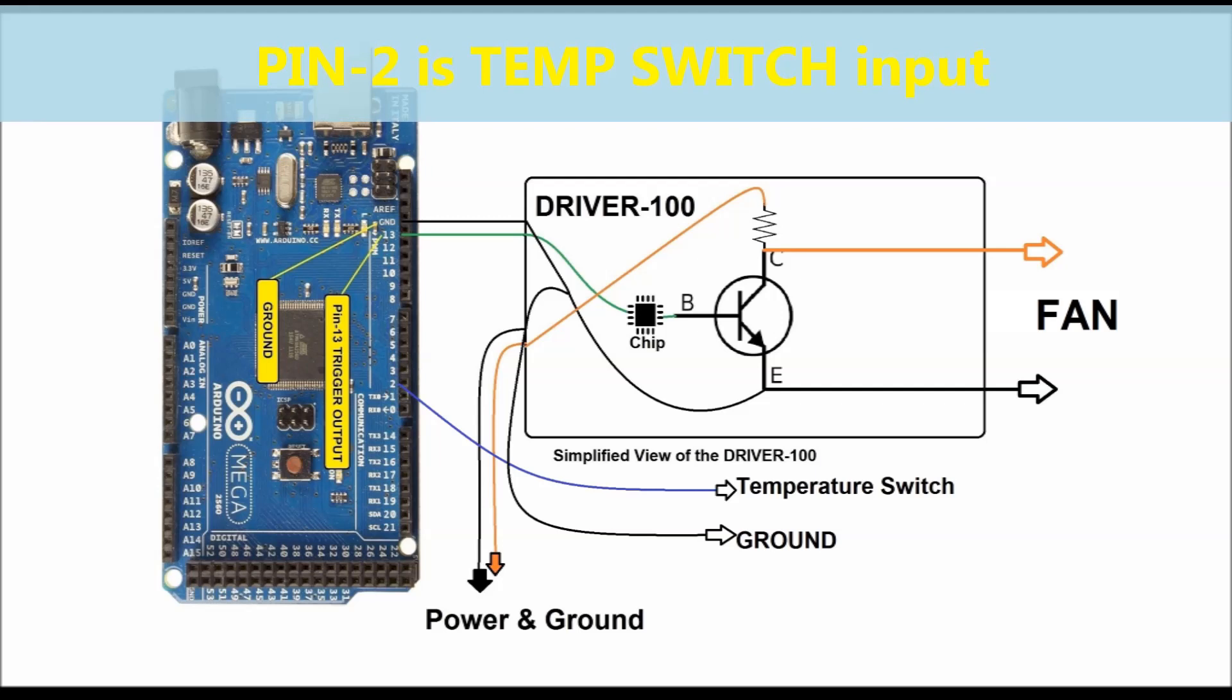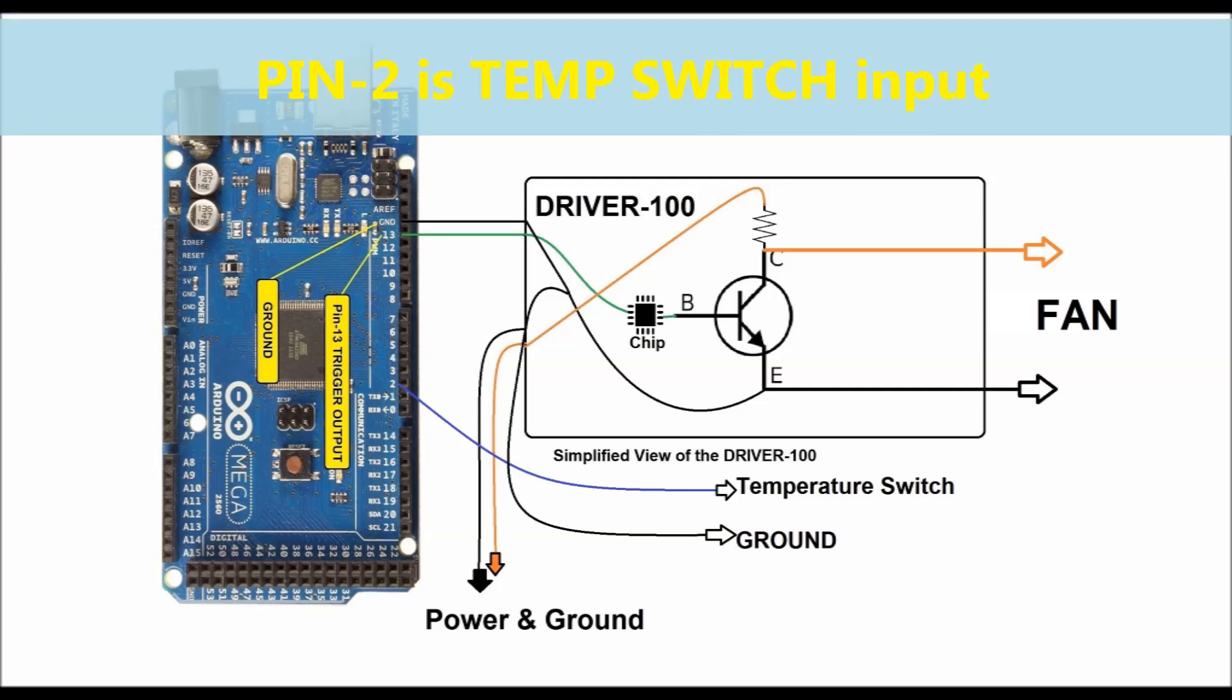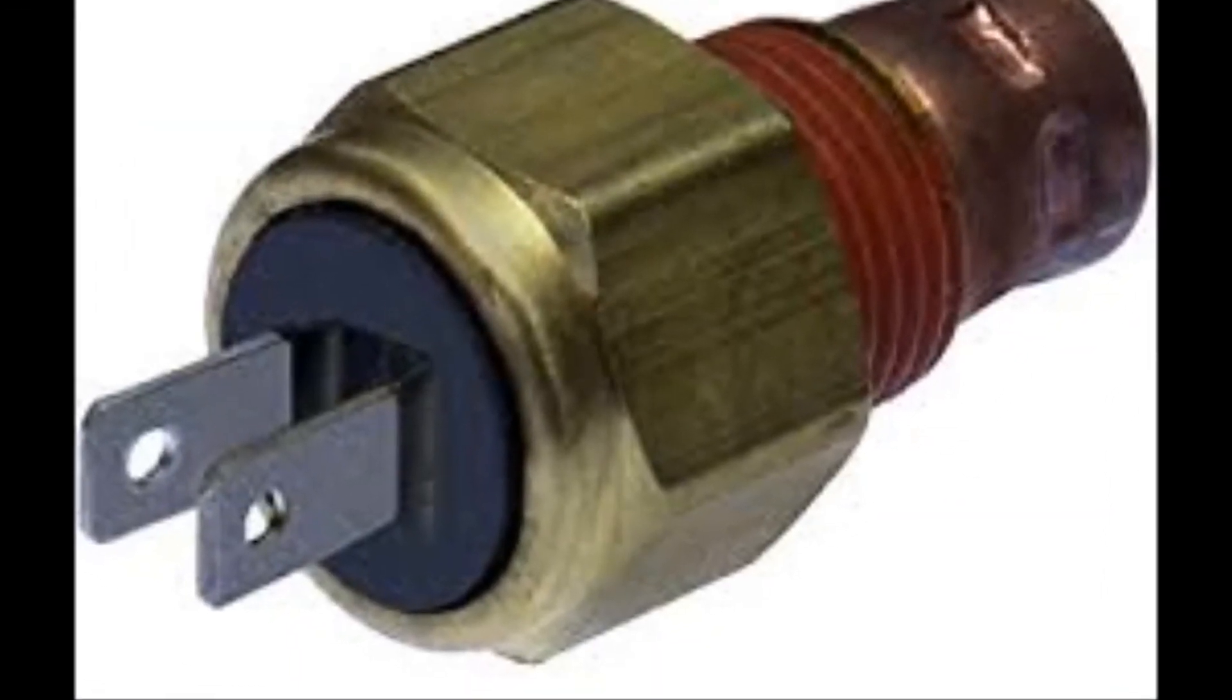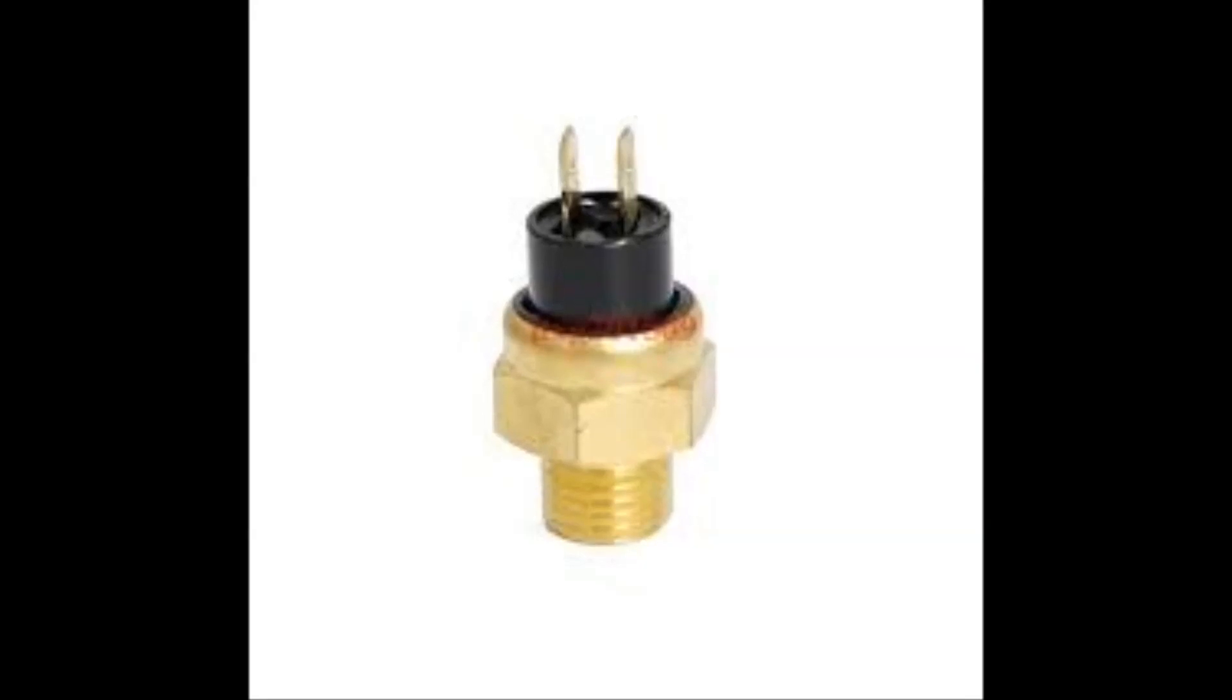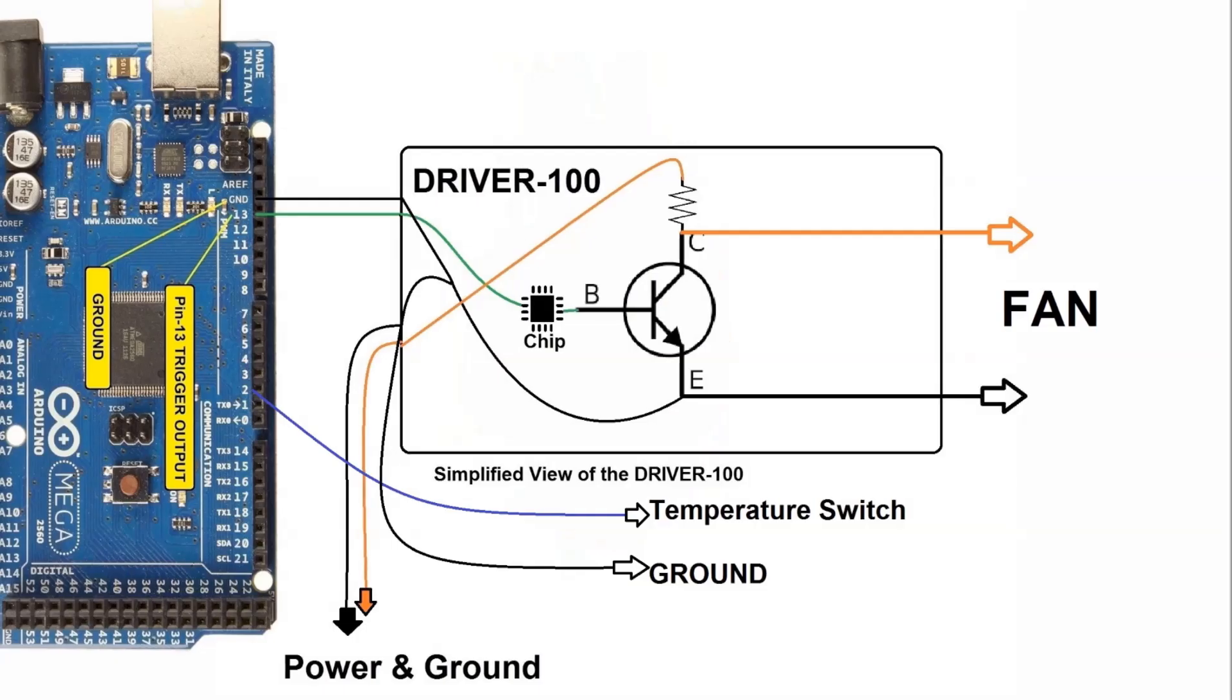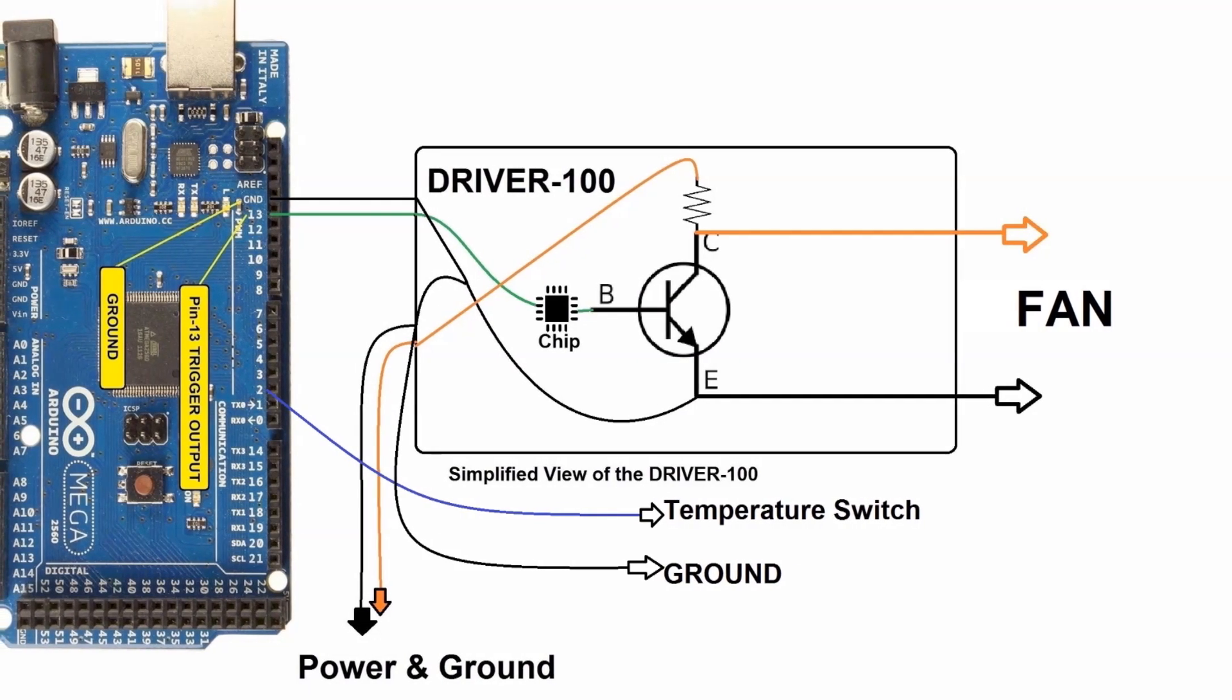And then you also have pin number 2. That's a temperature switch, which is connected to pin number 2 and ground. We're going to use a toggle switch here to represent the actual temperature switch. Temperature switches are two lead components.